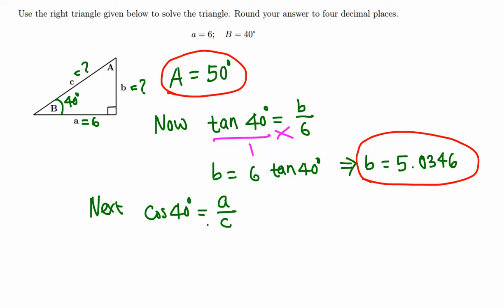We can cross multiply. Cross multiply to get c cosine 40 degrees equals 6. That gives c equals 6 over cosine 40 degrees.